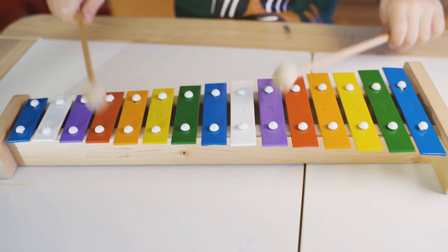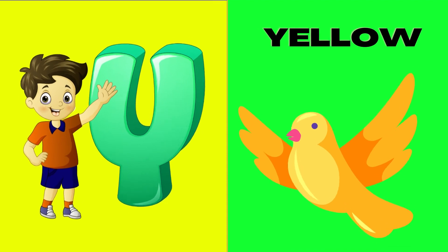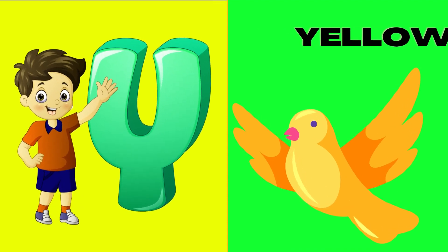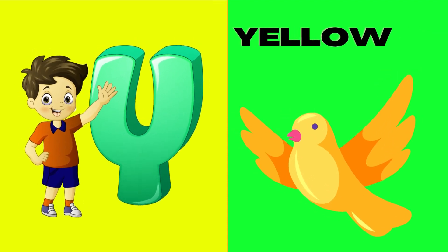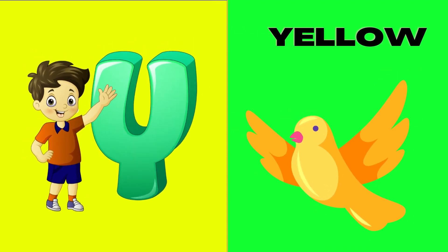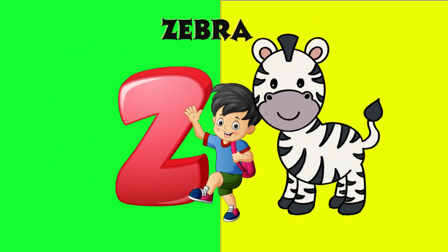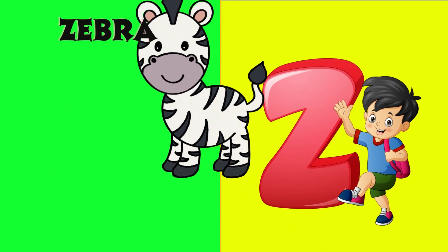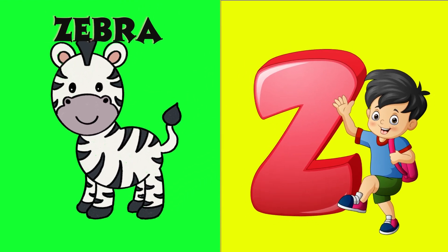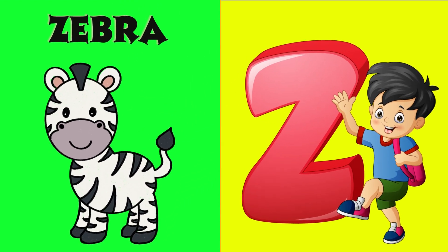Y is for yellow, y-y-yellow. Z is for zebra, z-z-zebra.